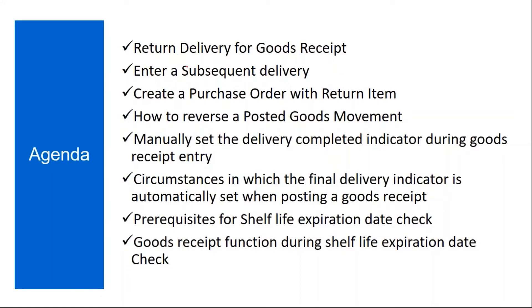The topics we are going to cover in goods receipt part two: return delivery for goods receipt, entering a subsequent delivery, creating a purchase order with return item, how to reverse a posted goods movement, manually set the delivery completed indicator during goods receipt entry, circumstances in which the final indicator is automatically set when posting a goods receipt, prerequisites for shelf life expiration date check, and goods receipt function during shelf life expiration date.